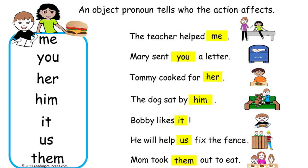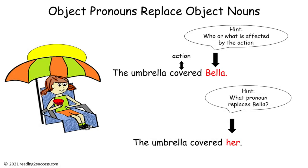Now introduce kids to object pronouns. An object pronoun tells who the action affects. The pronouns are: me, you, her, him, it, us, and them. Read each sentence: The teacher helped me. Mary sent you a letter. Tommy cooked for her. The dog sat by him. Bobby likes it. He will help us fix the fence. And Mom took them out to eat.